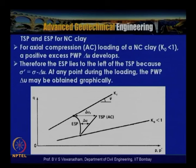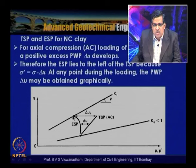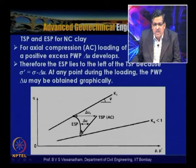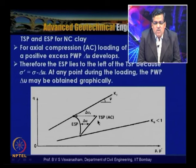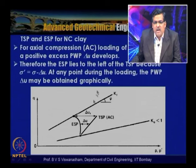At any point during loading, the pore water pressure ΔU can be obtained graphically from the horizontal distance between the total and effective stress paths. For normally consolidated clay under axial compression, AC is the total stress path and the effective stress path lies to its left, with ΔUf being the pore pressure at failure.